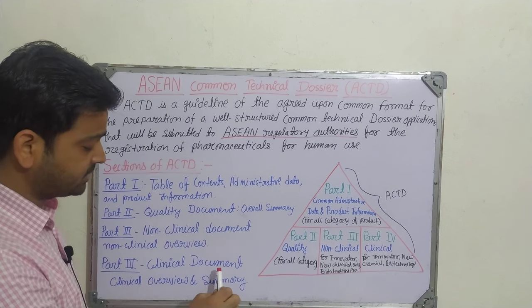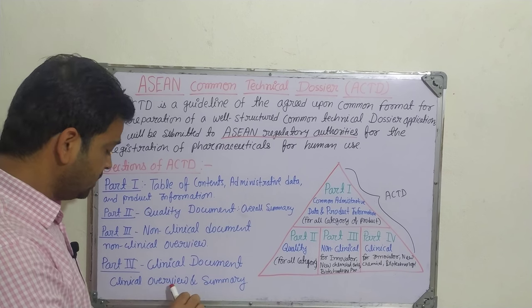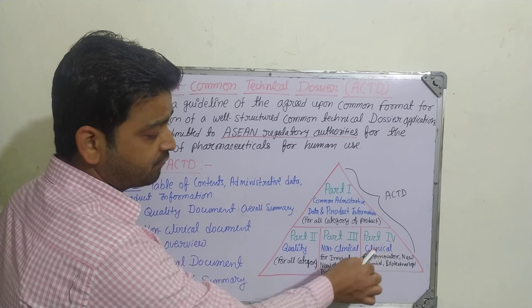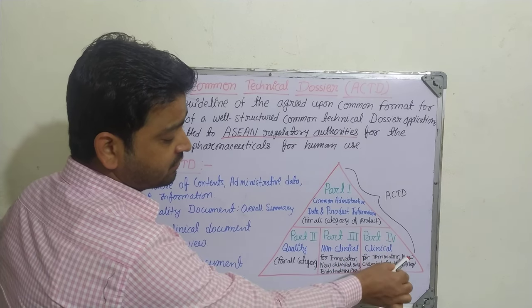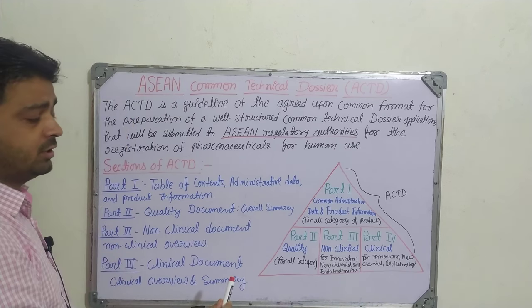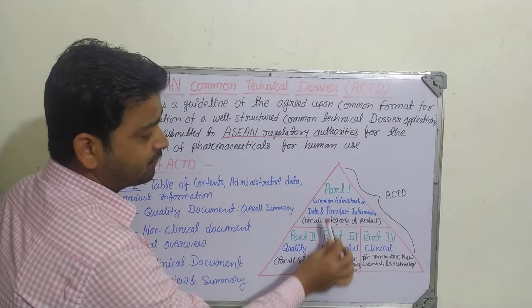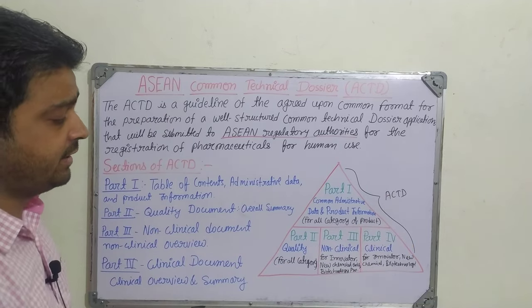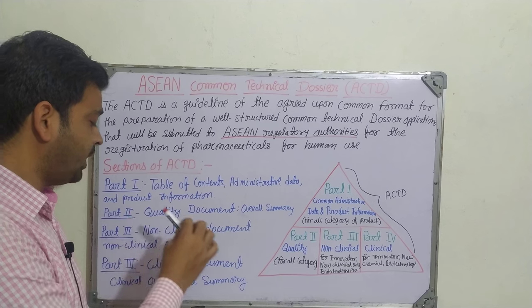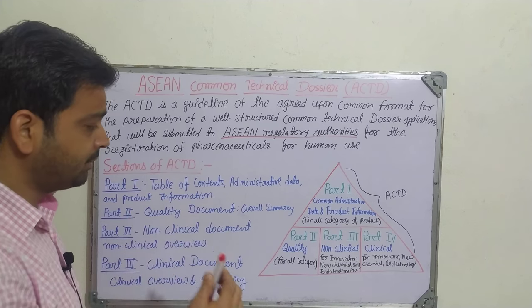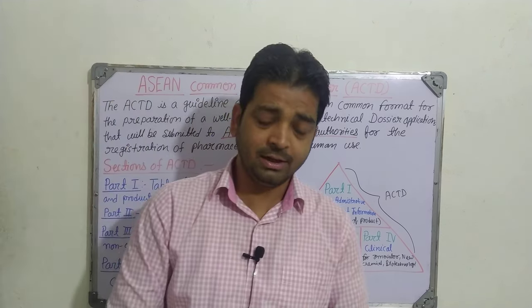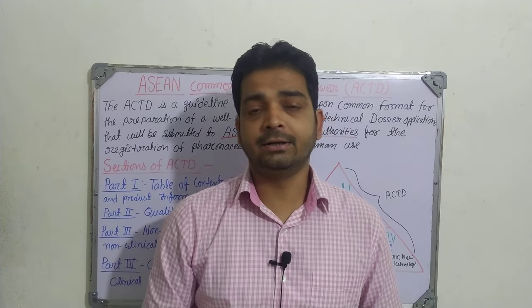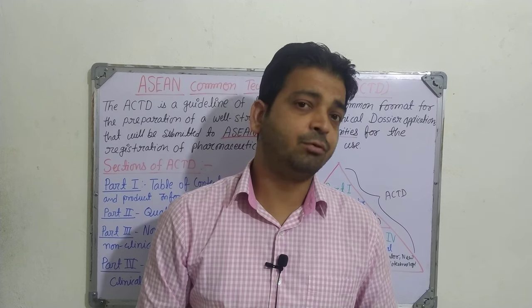Part four is for clinical documents — clinical proceedings, overview, and summary. Both are supposed to be submitted. You can see in the triangle model that part four — clinical — is also for innovator or branded drug, new chemical entity, and biotechnological products. So this entire structure of four parts is called the ACTD, Asian Common Technical Dozer. In all four parts, whatever proceedings have been done for the new pharmaceutical ingredient, new drug, or new chemical entity will be given in these four parts of details.